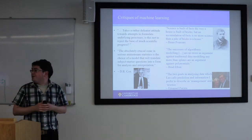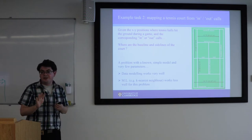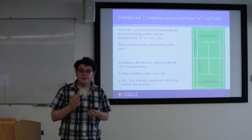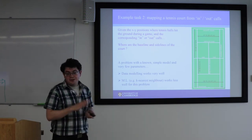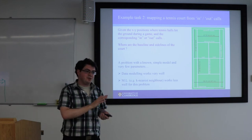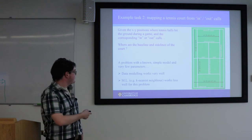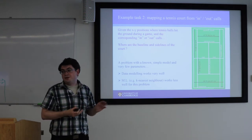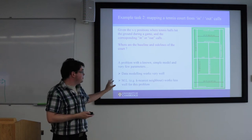Let me do a couple more examples to show which tasks these machine learning methods can be very useful and effective for. I'll start with a task where they're not going to be effective so you can see the difference by contrast. This is a tennis court, and the task is: given x-y positions where the ball lands and whether it was called in or out, can you tell me where the edge of the tennis court is — the baseline and sidelines? This is a really simple problem with a known simple underlying truth and very few parameters, so data modeling will do very well and machine learning might find it pretty hard.